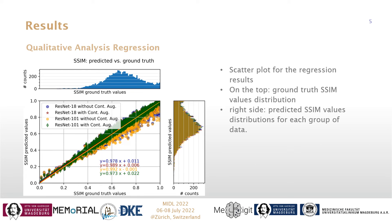It's time for the results. The scatter plot here shows the predicted and the ground truth SSIM values. It can be seen that all four models manage to predict the SSIM values close to the ground truth ones, and they perform quite similarly. However, the models without contrast augmentation performed worse compared to the models with contrast augmentation.